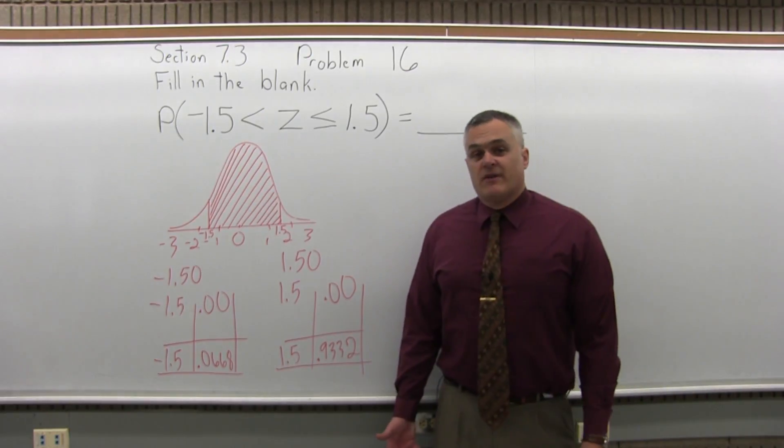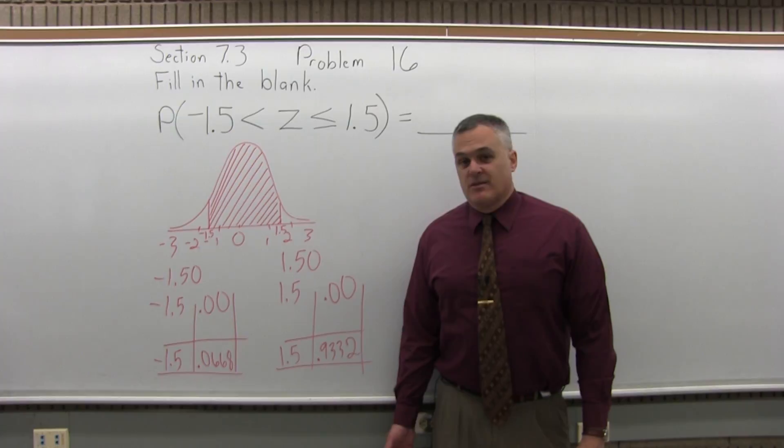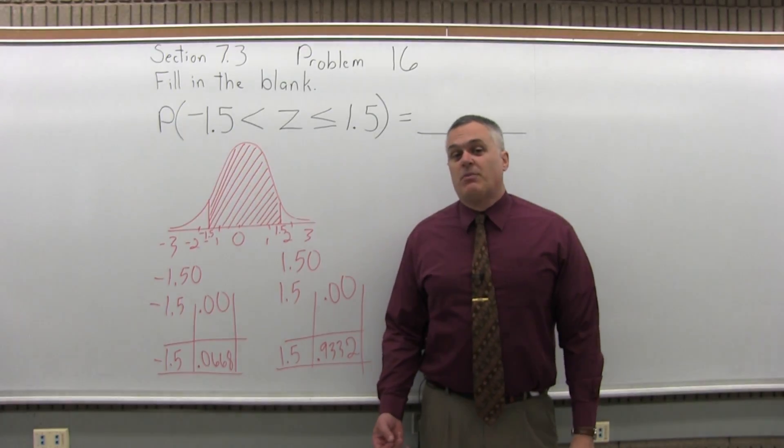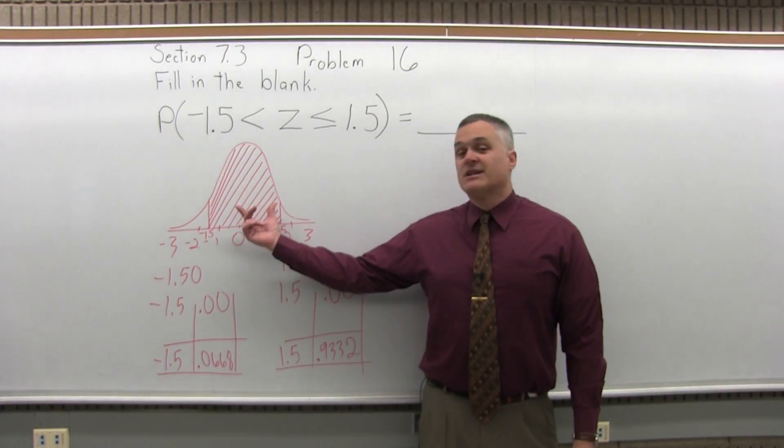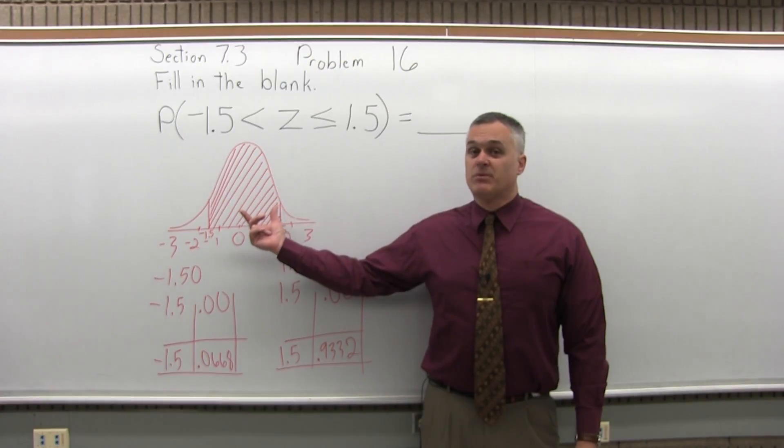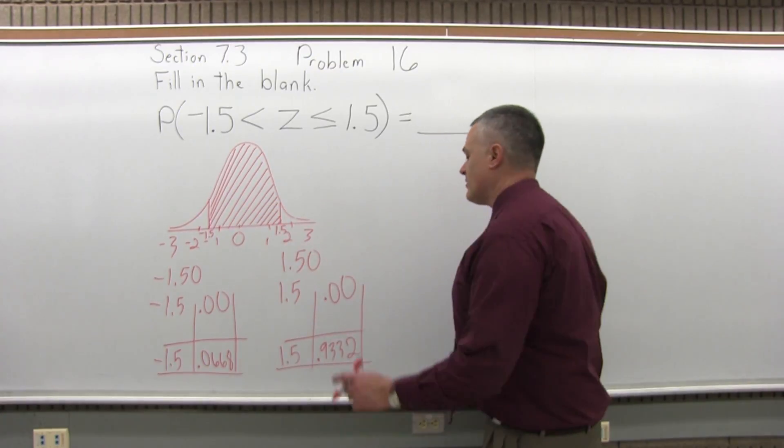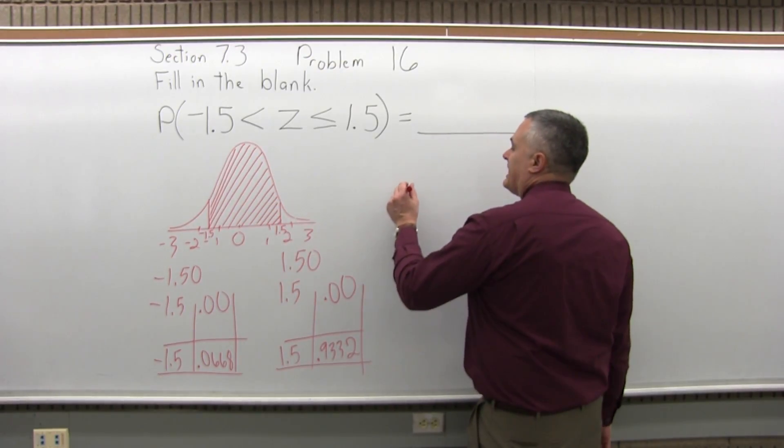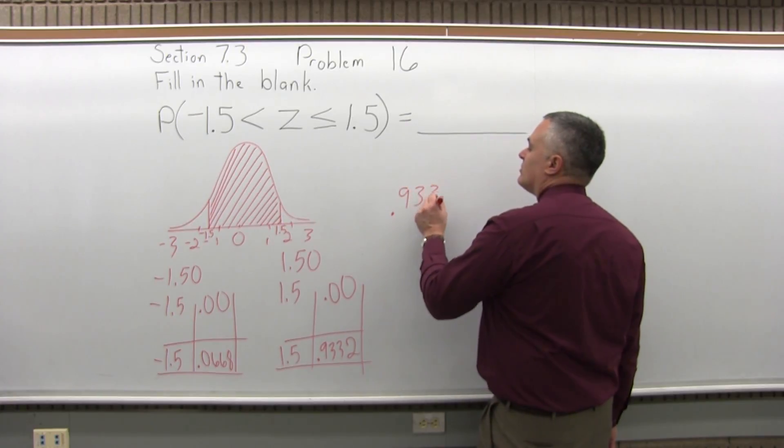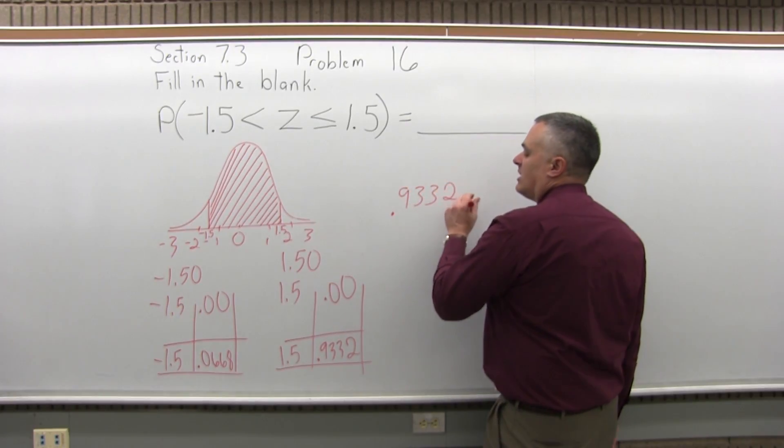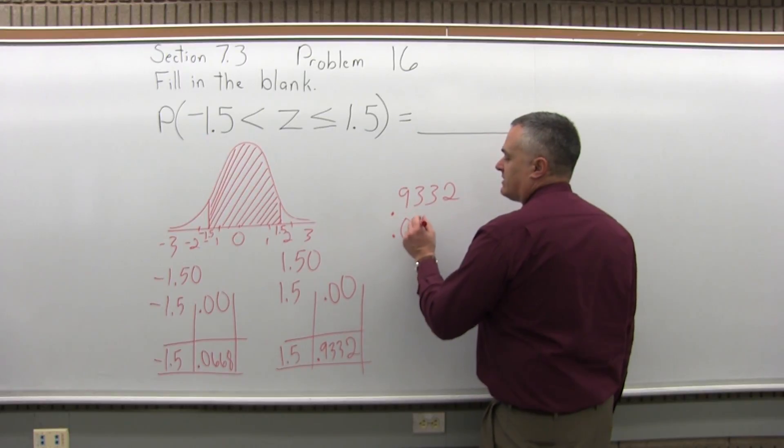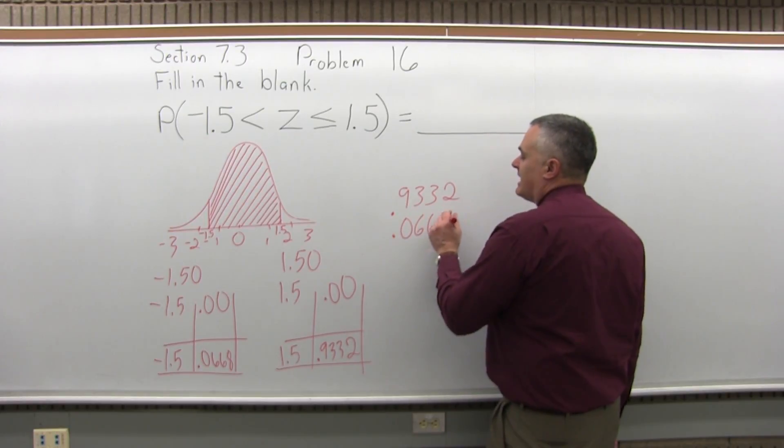So now I have my two chart values. I'm going to subtract them. I have to subtract them in order that will give me a positive result. The result I'm finding is a probability. A probability must be positive. It can never be negative. So I'm going to subtract 0.9332 minus 0.0668.